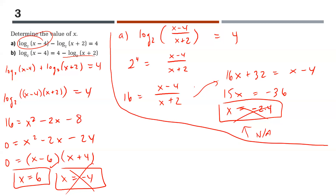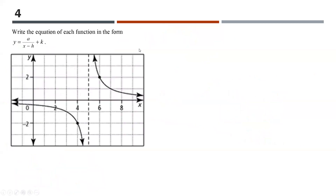One more thing to note: you'd also check for non-permissible values — x cannot equal negative 2 — but since that value would produce a negative logarithm anyway, it doesn't change our conclusion. The only solution to part B is x equals 6.